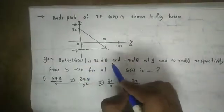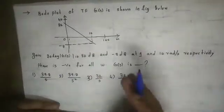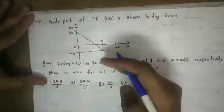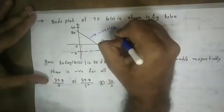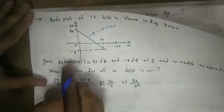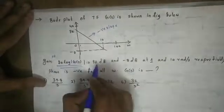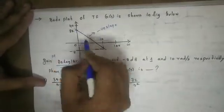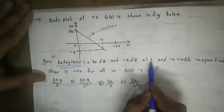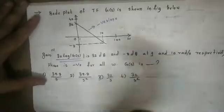For the next question: G(s) has a magnitude of 32 dB at 1 radian per second and minus 8 dB at 10 radians per second. The phase is negative for all omega. So 20 log |G(s)| is the magnitude — 32 dB at 1 rad/s and minus 8 dB at 10 rad/s. G(s) is the open loop transfer function.